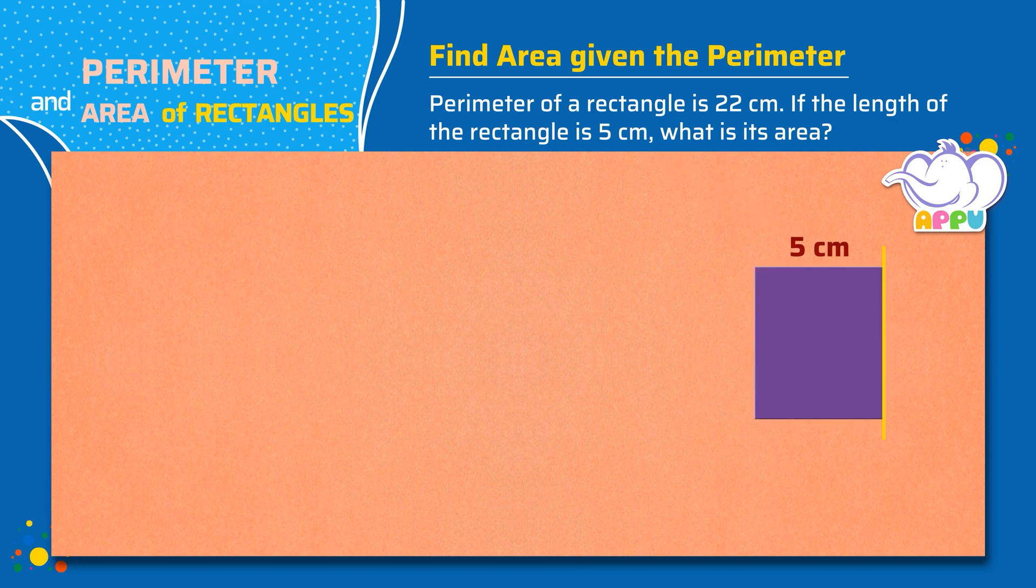We know the formula to find the perimeter of a rectangle equals 2 times length plus width. We first find the width of the rectangle and then find the area.